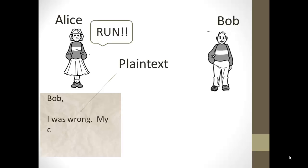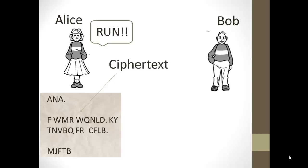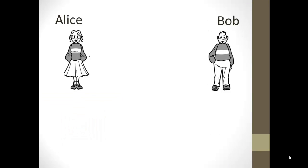The message reads: 'Bob, I was wrong, my cover is fine, Alice.' Now this is written in plain text because we can read it, but before she sends it she encrypts it. We call this the cipher text and it should be illegible, so that anyone who intercepts it can't read it without the key. Now she's going to send this message off to Bob.